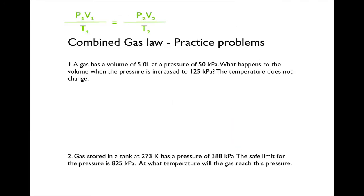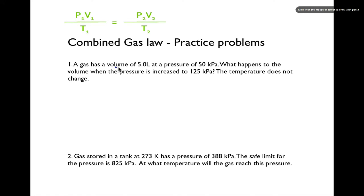Let's look at some practice problems using the combined gas law. The units to remember: volume is in liters (L), and pressure is in kilopascals (KPA), named after Pascal. In the equation, the subscript 1 values are initial and subscript 2 are final. Problem 1: a gas has a volume of 5 liters at a pressure of 50 KPA. What happens to the volume when pressure is increased to 125 KPA? Temperature does not change.